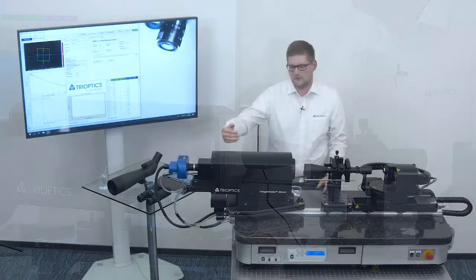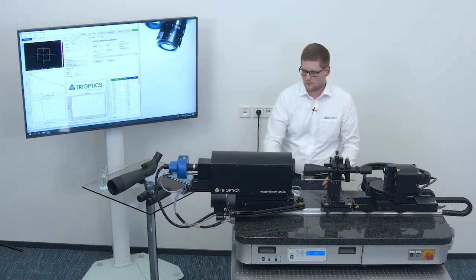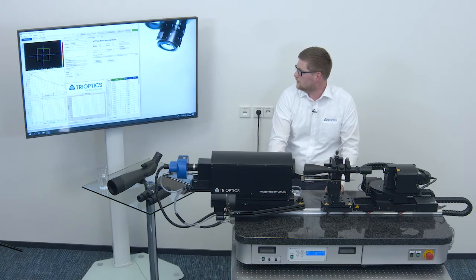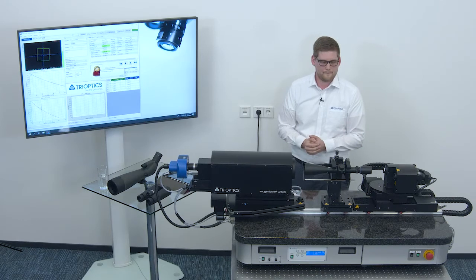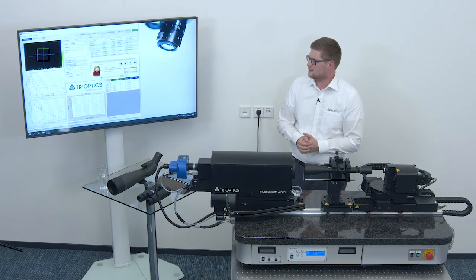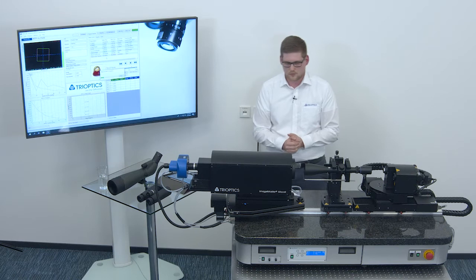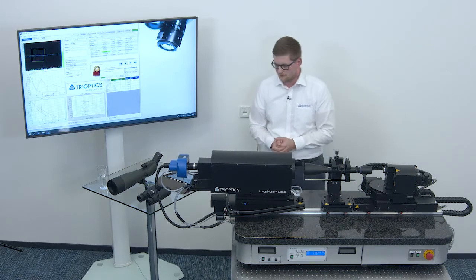We will now measure the MTF and the collimator will move from one side to the other of the field of view and the detector will follow. We will get different results for the image quality over the complete field of view.